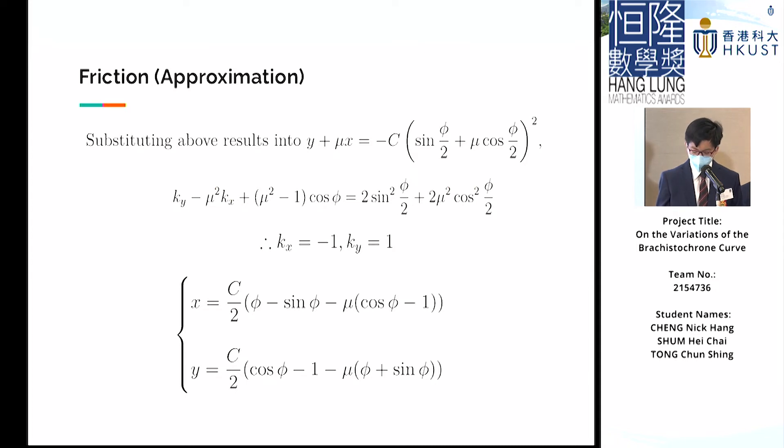Note that when μ = 0, the resulting curve is the classical Brachistochrone curve as expected.